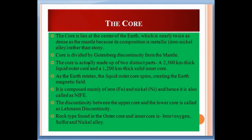The core lies at the center of the Earth and is nearly twice as dense as the mantle because its composition is metallic — an iron-nickel alloy — rather than stony. The core is divided from the mantle by the Gutenberg discontinuity. It consists of two distinct parts: a 2300-kilometer-thick liquid outer core and a 1200-kilometer-thick solid inner core. As the Earth rotates, the liquid outer core spins, creating the Earth's magnetic field. It is composed mainly of iron and nickel, and hence is also called NIFE.